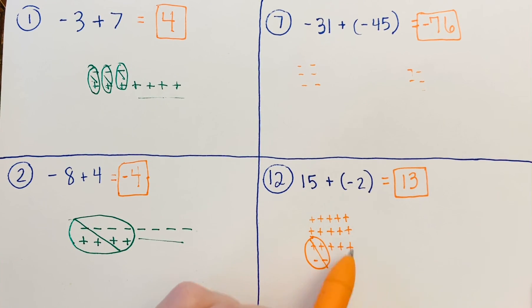You've got 5, 10, 11, 12, 13 positives left over. Feel free to rewatch this video if you're still confused or ask me for help.